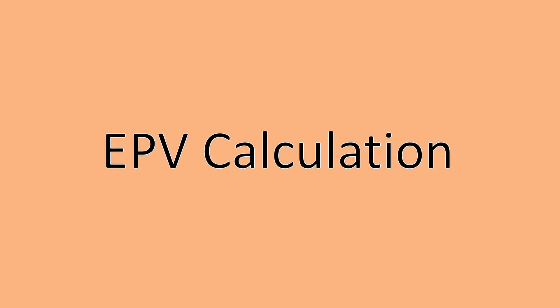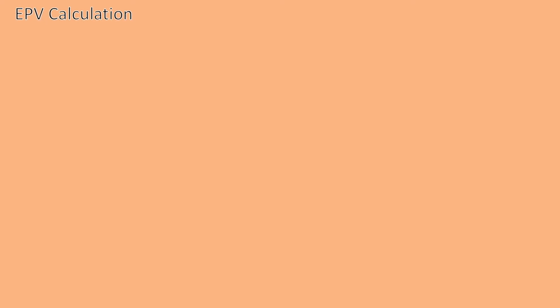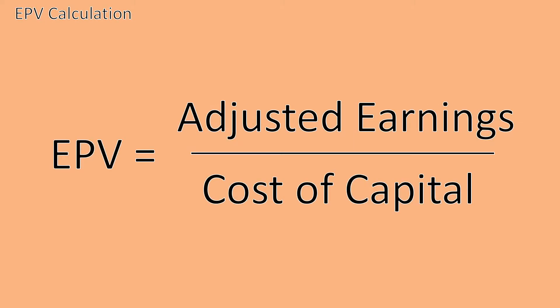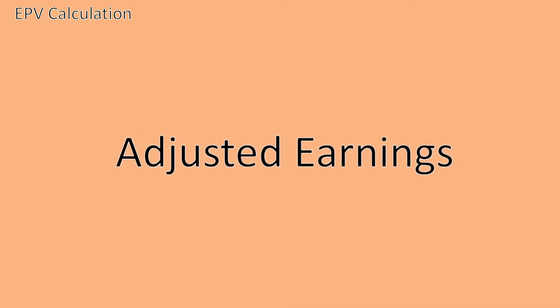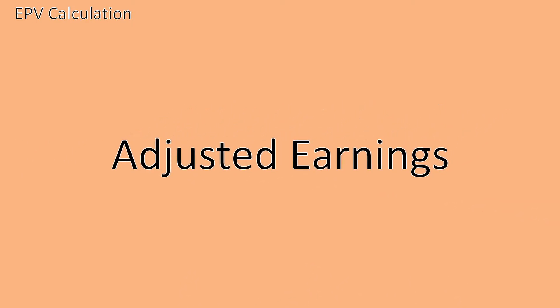Now let's see how to calculate the earnings power value. The formula for the EPV is basically a perpetuity. We divide our adjusted earnings, which we use as a proxy for cash flows, by the cost of capital, which acts as our discount rate. In this video, we will focus on the adjusted earnings due to them being unique to the EPV. Going deep into discount rates and cost of capital would go far beyond the scope of this video.